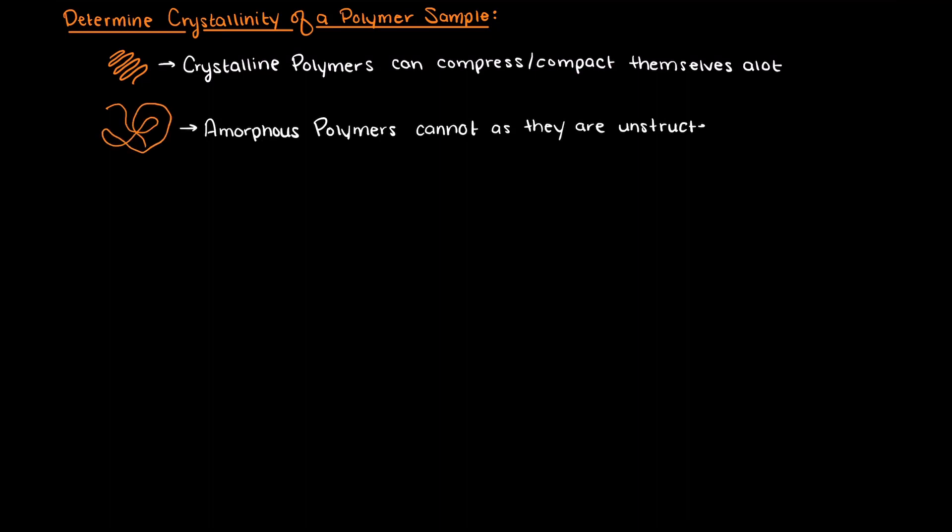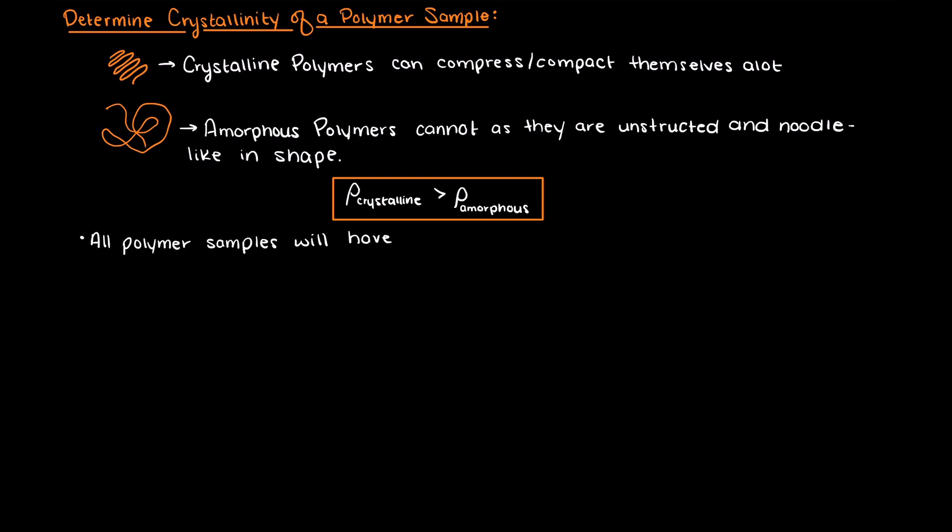So let's just remember one key difference between crystalline and amorphous polymers. Crystalline polymers are able to compress and really compact themselves whereas amorphous polymers are not structured and are very noodle-like. Therefore, crystalline regions in a polymer will have a higher density than the amorphous regions. Remember that all polymer samples will have some amorphous and crystalline regions.